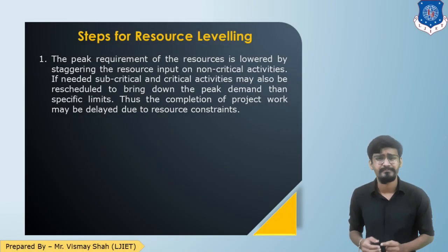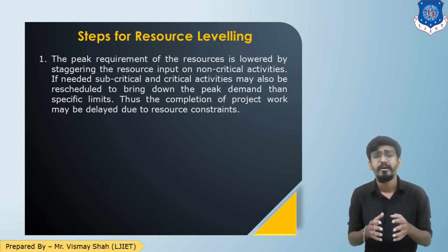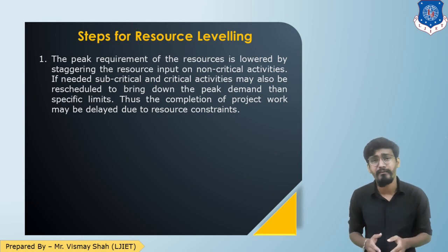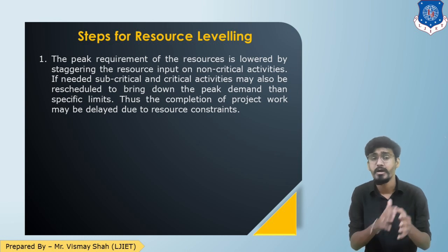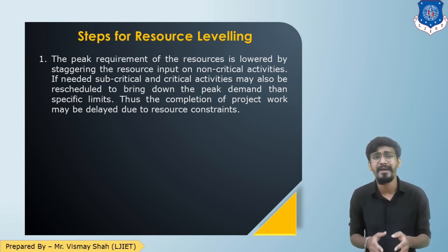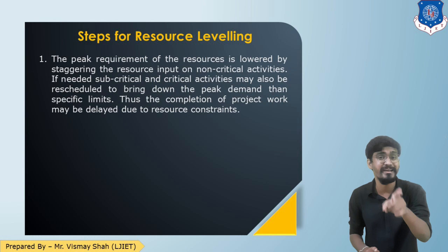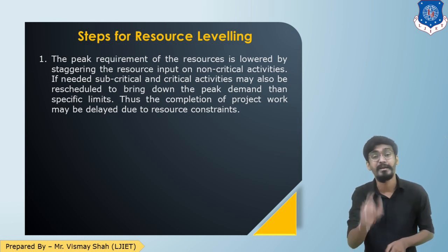Now let us see the step-by-step process of resource leveling. Step one: the peak requirement of the resources is identified and that peak requirement is lowered by staggering resources on non-critical activities. If required, sub-critical and critical activity resources are also used to lower the peak requirement. By doing so it may happen that the completion of the project gets delayed — unlike resource smoothing, where there was a time restriction.